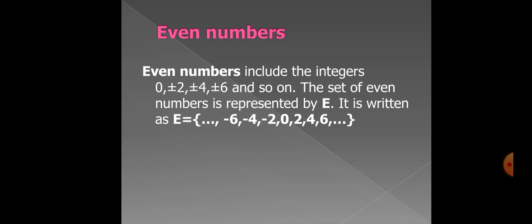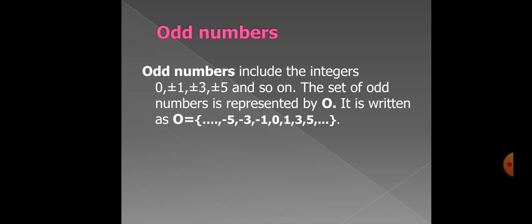Odd numbers include the integers 0, plus minus 1, plus minus 3, plus minus 5 and so on. The set of odd numbers is represented by O. It is written as O equal to calibrator start. In the middle of the numbers 0. Right side 1, 3, 5. These are the positive numbers. On the left side, minus 1, minus 3 and minus 5. These are the negative numbers on the left side.